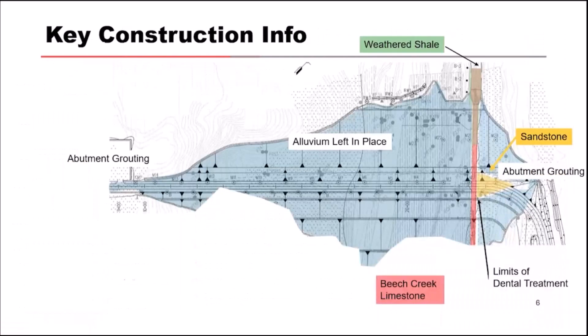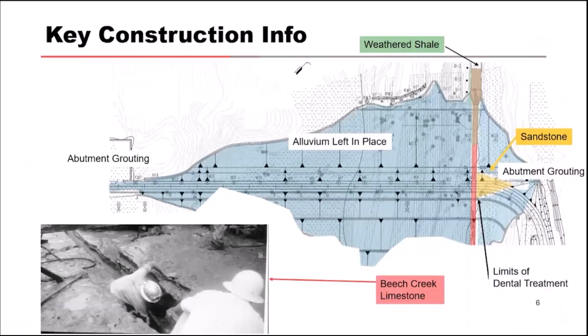Some key construction info: this dam doesn't have any of the modern foundation treatment techniques. The dam was constructed with no core trench. There was no foundation grouting or dental treatment between the outlet conduit and the lower left abutment. That naturally deposited alluvial material was left in place — it was not stripped to rock, not excavated. That material ranges up to 40 feet thick and is generally cohesive. There was limited foundation treatment below the conduit and along the upper right abutment, and later they did some abutment grouting to treat the upper karst unit in the far left and right abutments.